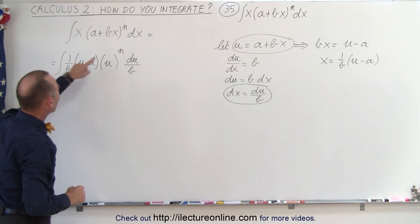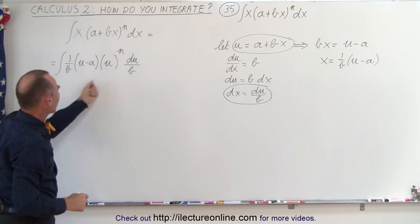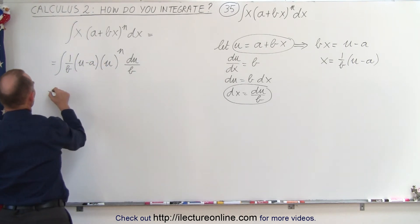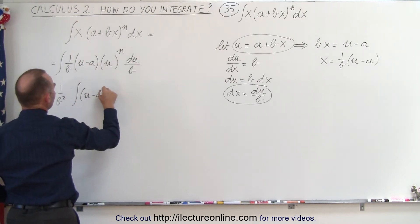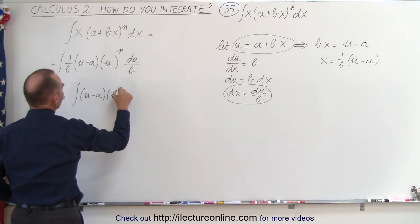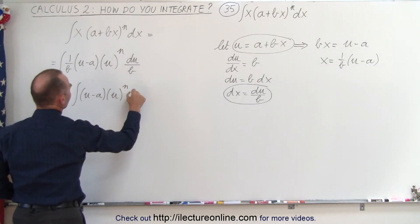Notice we have 1/b and another 1/b. That's 1/b², which can come out. So this can now be written as 1/b² times the integral of (u - a) times u^n du.